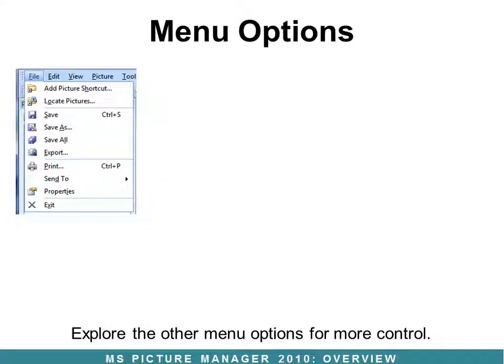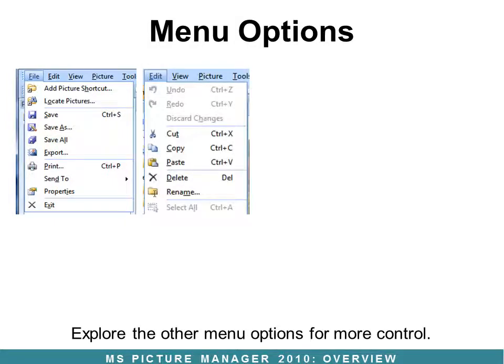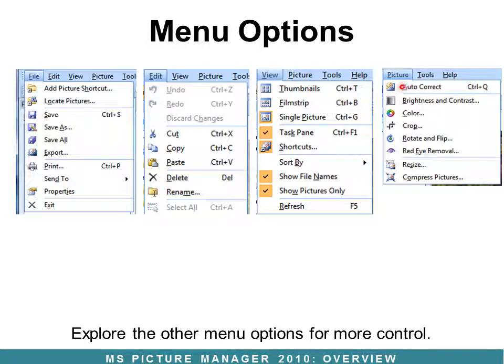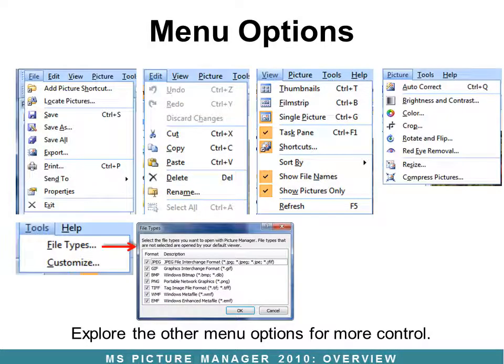There are other menu options as well. Under File, you can save and choose what to do. Under Edit, you can rename a picture. Under View, you can choose how to view it — we saw most of those already. Under Picture, we saw all of the editing tools from the toolbar. Under Tools > File Types, you can set which picture file types you'd like to open with Picture Manager automatically, so whenever you open a new picture, it will automatically launch Picture Manager.